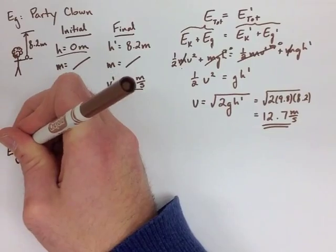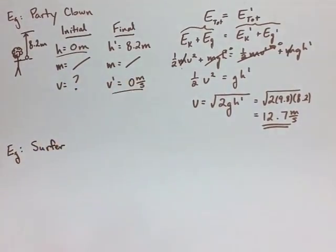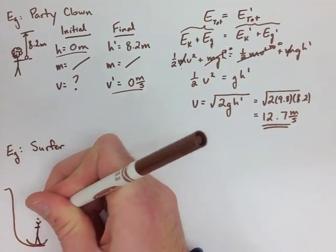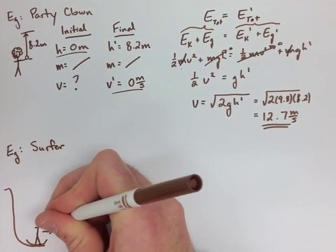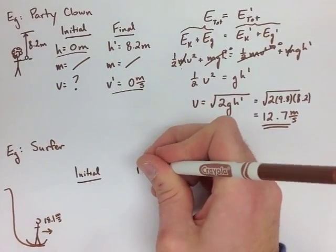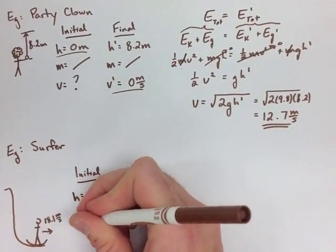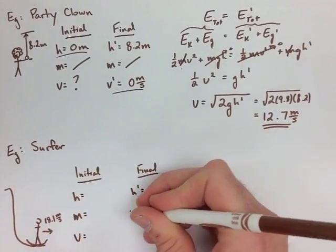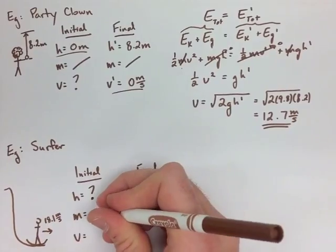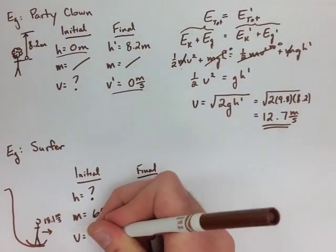In the second example, we're looking at a surfer going down a wave. We're going to say that this 65 kilogram surfer starts at a velocity of zero at the top of the wave and then surfs down the wave and gets a velocity of 18.1 meters per second at the end. We know he's at the bottom, so he's at height zero at the end, but we don't know what the height at the start of this wave was.